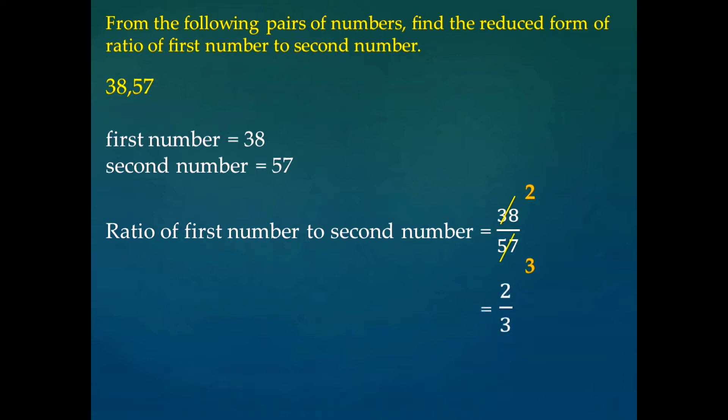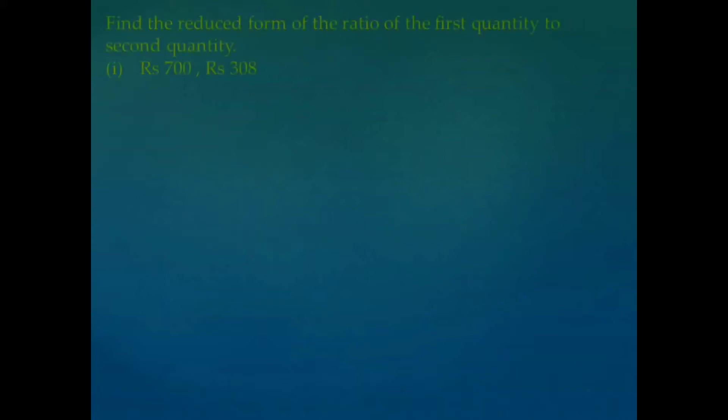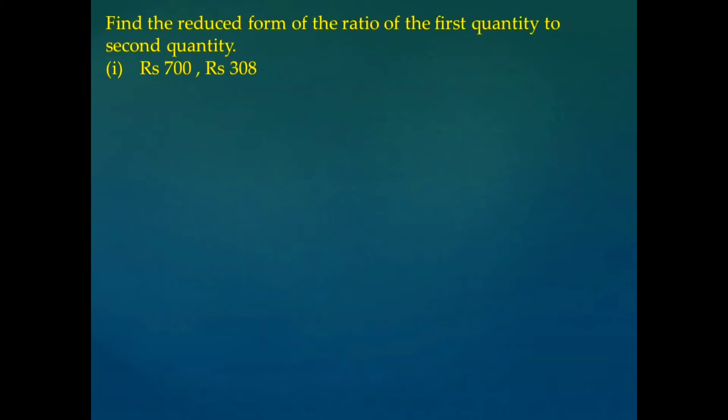That is equal to 2 by 3. So the reduced form of this ratio is 2 is to 3.